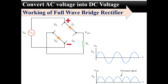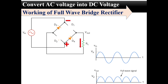For the negative half cycle, the polarity of supply changes. For this polarity, diodes D1 and D2 become reverse biased and work as open circuits, whereas diodes D3 and D4 will become forward biased and start conducting. This time, current flows through diode D3, then load resistance, and then diode D4. In both cycles, the direction of current in the load resistance is the same, so the output will be as shown in this waveform. In this way, the full wave bridge rectifier converts AC voltage into DC voltage. Again, this is pulsating DC, which is converted into pure DC by using filter circuits.